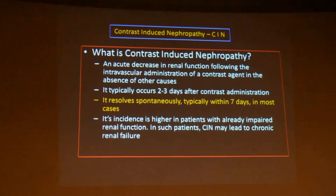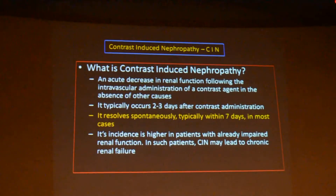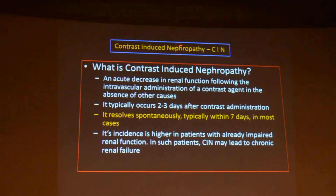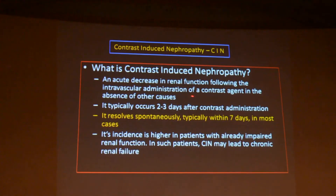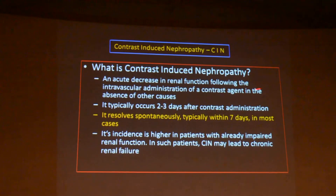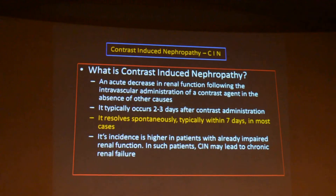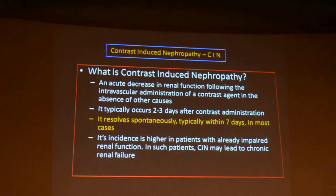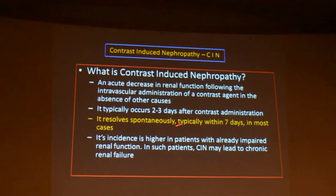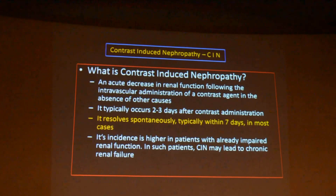CIN — contrast-induced nephropathy — is one of two hot topics today. They are very important from an exam point of view. Contrast-induced nephropathy is an acute decrease in renal function following the intravascular administration of a contrast agent in the absence of any other cause. In a normal patient with normal creatinine levels, when you inject contrast they develop renal function deterioration. It generally occurs two to three days after administration and most often settles on its own without any intervention within a week.